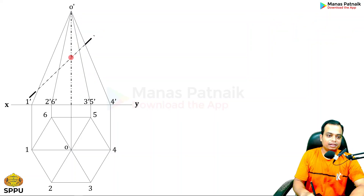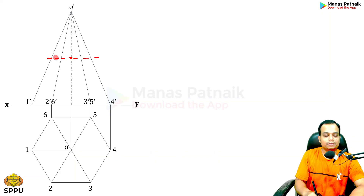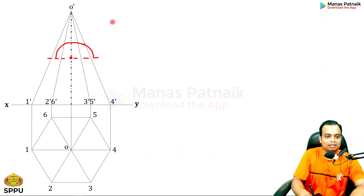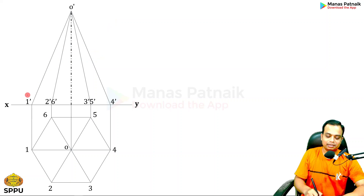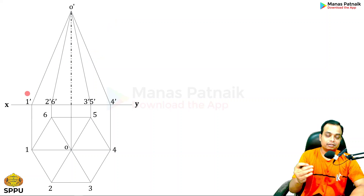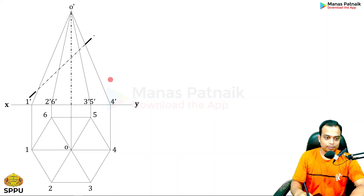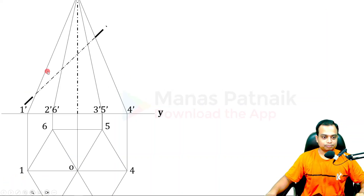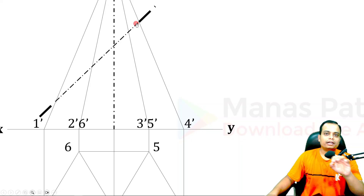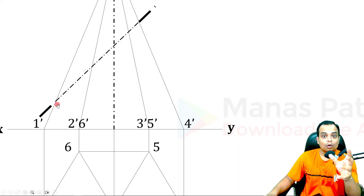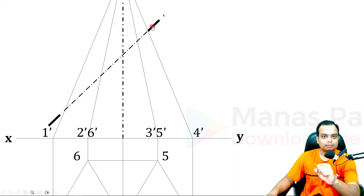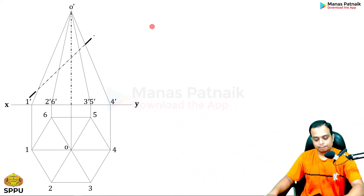To draw the section plane, place a protractor and at 45 degrees mark a point, then pass a line through it. For the section plane line conventions: the part of the cutting plane inside the solid is kept thin (hidden), and the part outside is kept thick. There should be a clear difference between both parts.